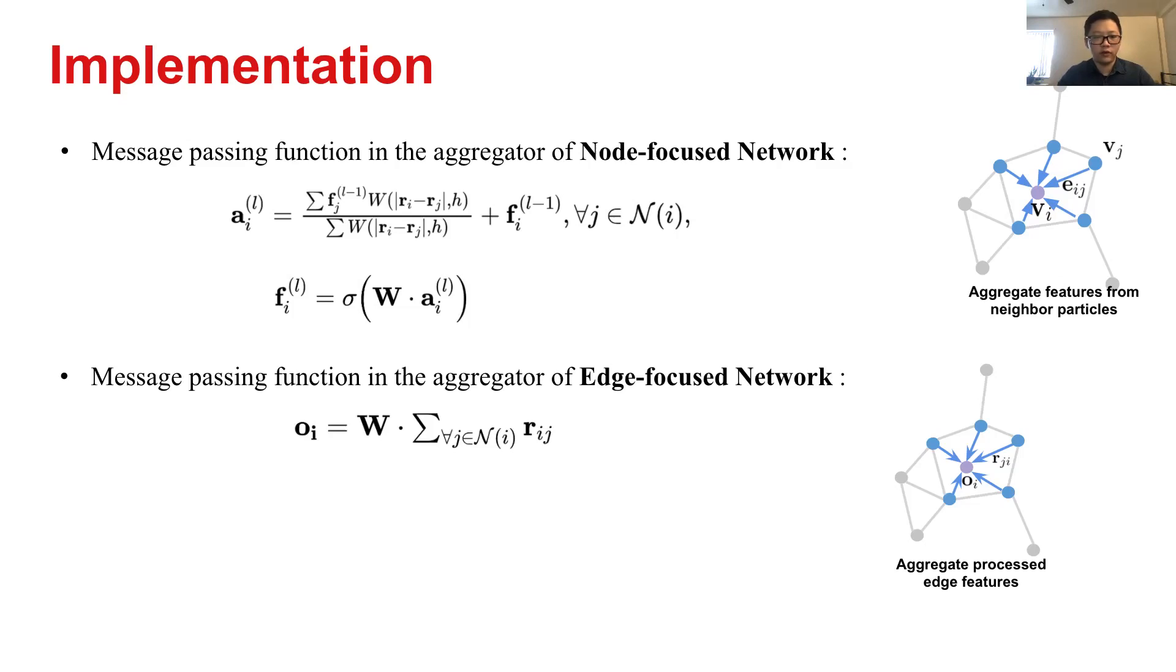And also, as the graph is self-connected, which means we also need to add the feature from the central particle itself. Then we apply a linear transformation and then we use a nonlinear activation function on the feature we got.